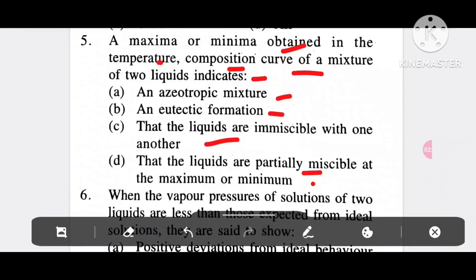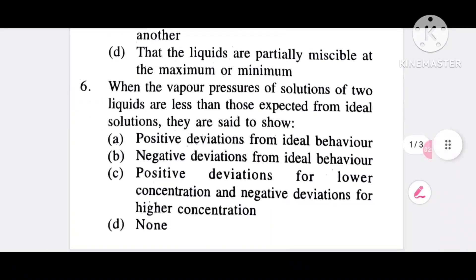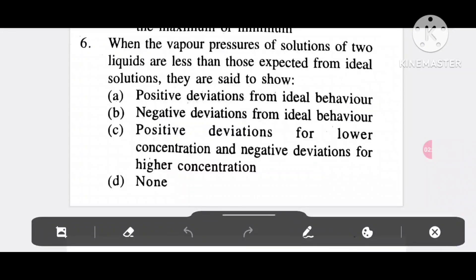Question 6: When the vapor pressures of solutions of two liquids are less than those expected from ideal solution, they are said to show option A, positive deviation from ideal behavior; option B, negative deviation from ideal behavior; option C, positive deviation for lower concentration and negative deviation for higher concentration; option D, none. It is negative deviation from ideal behavior, option B.